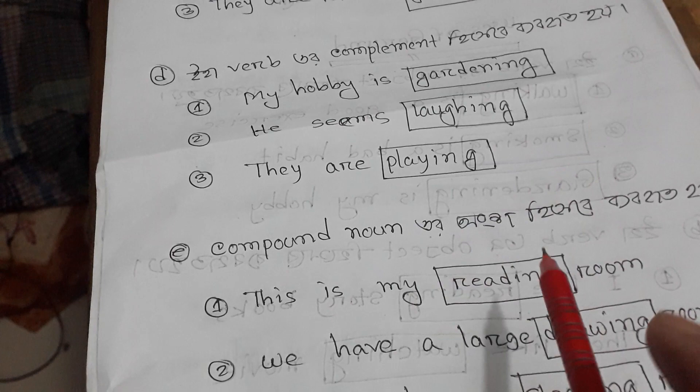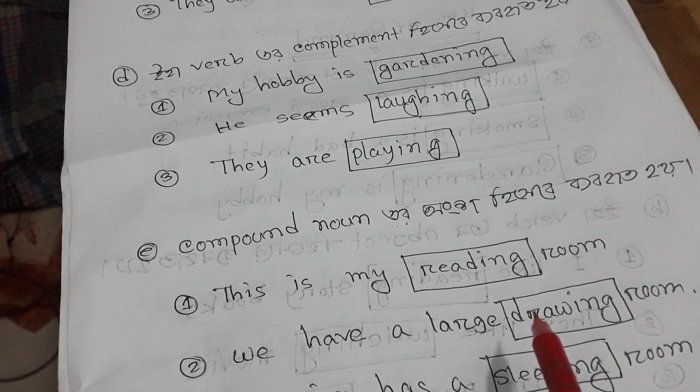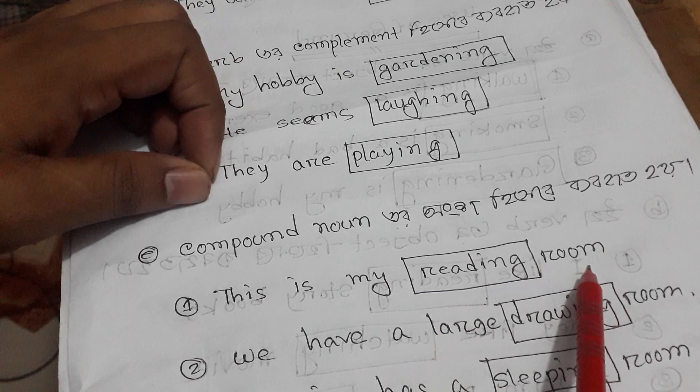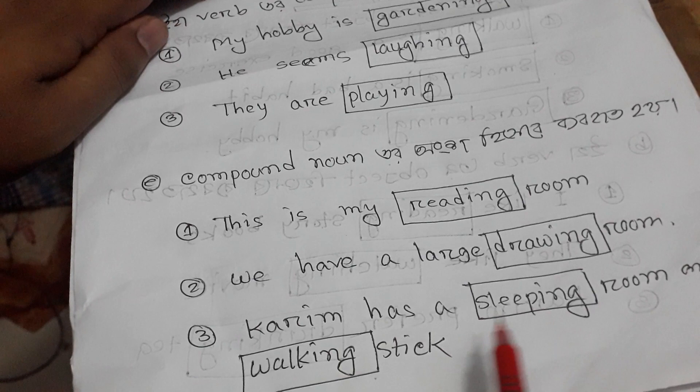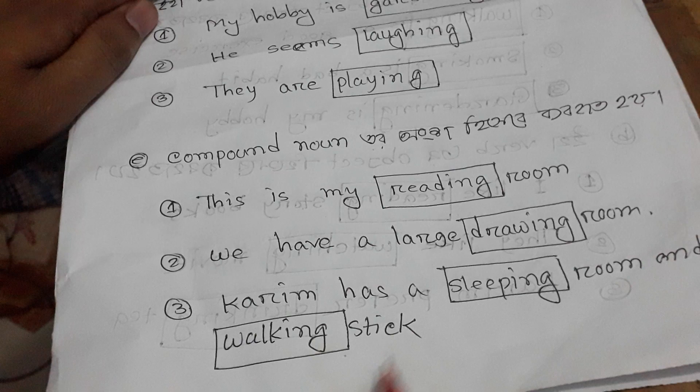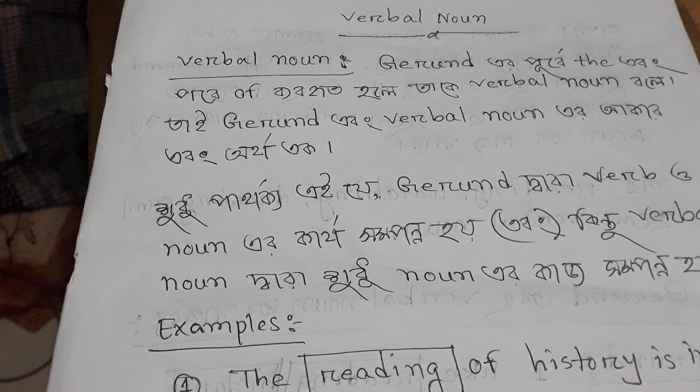This is a compound noun. Number one is a compound noun. We have a large drawing room. We have a sleeping room. And a walking stick.